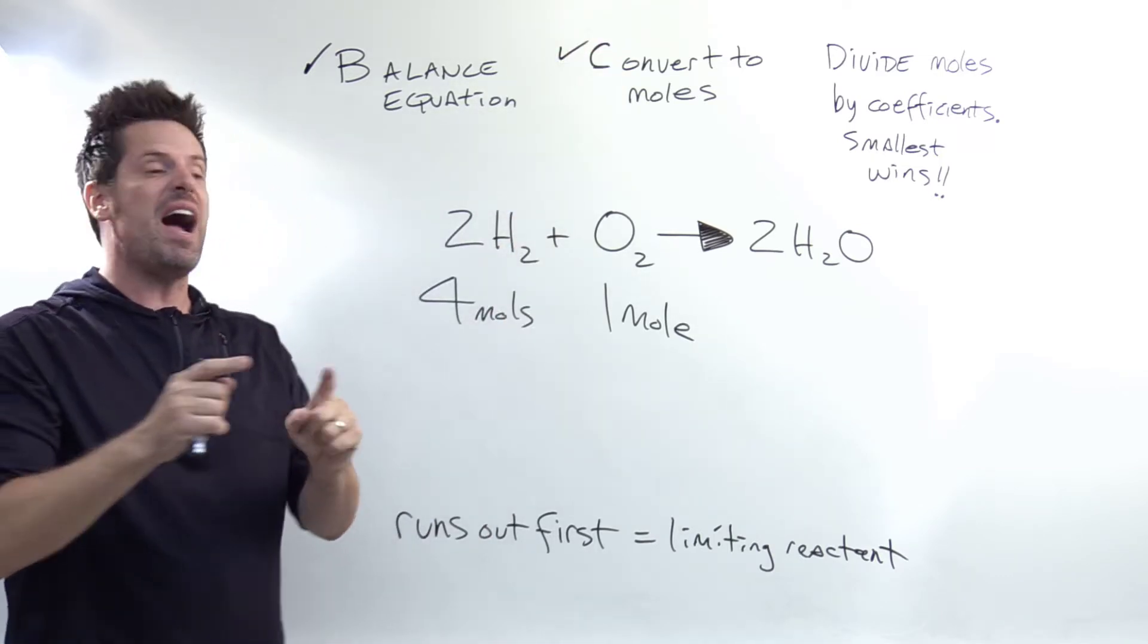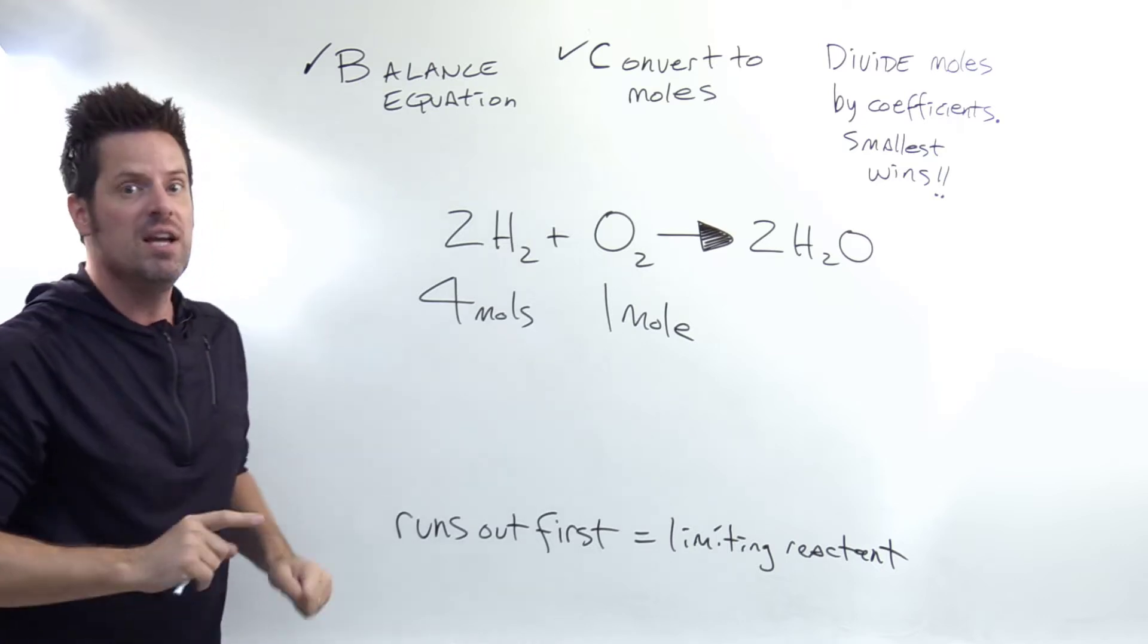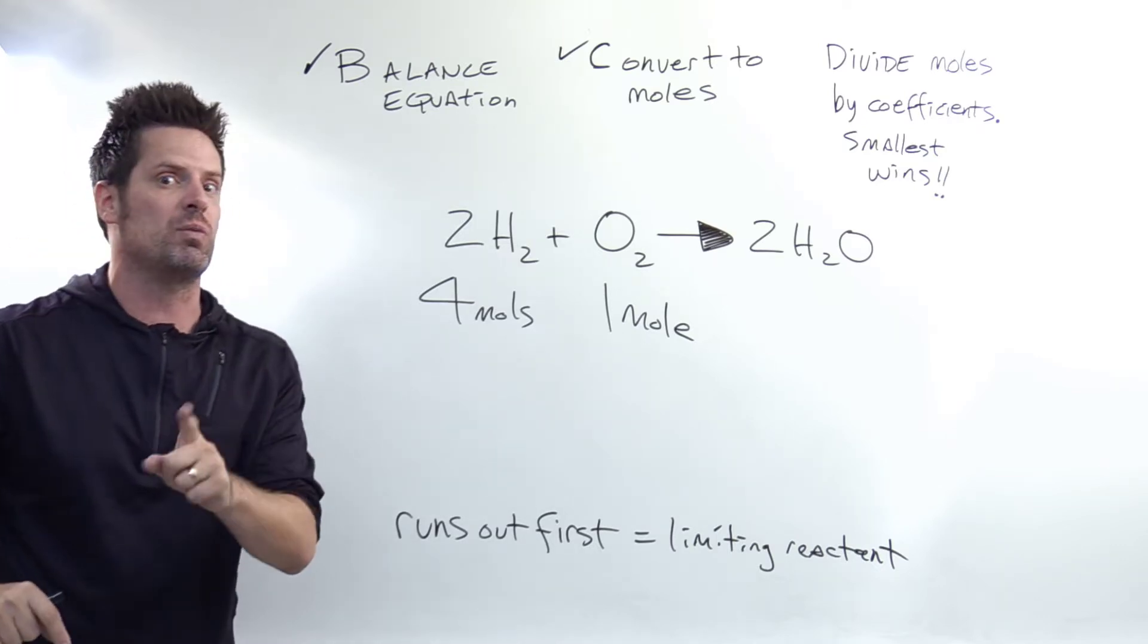Step D then is divide each of these mole amounts by the corresponding coefficients. The smallest one wins, that is the smallest one is the limiting reactant.